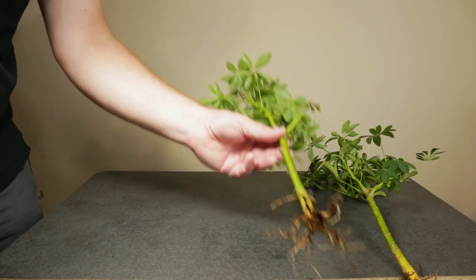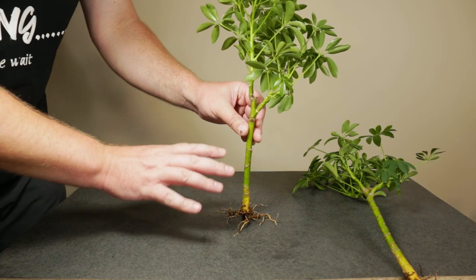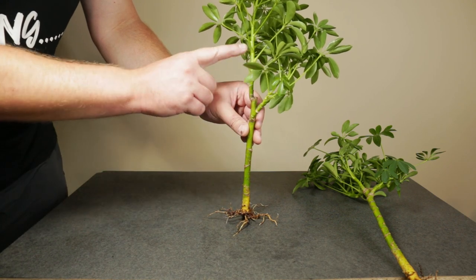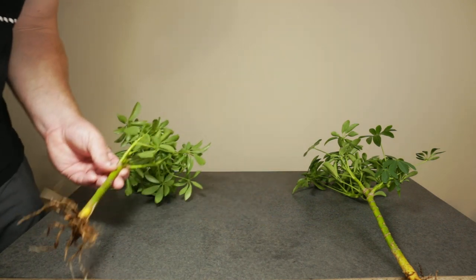Next, it's time to decide what shape to train this into. For this one, I will go with a basic broom style, since it has these three main branches forming a classic vessel shape. So I'll prune this one first.